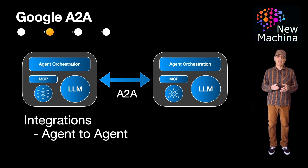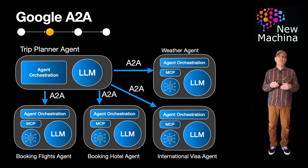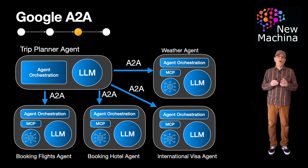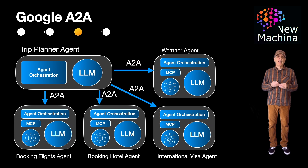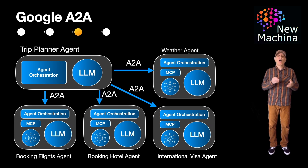Let me provide an example use case that shows how A to A and MCP can work together. Let's say your AI assistant is planning a trip. It doesn't do everything by itself — instead, it talks to other agents in the system. There is one agent for checking the weather, one for booking flights, another for booking a hotel, and maybe even one that checks international visa rules. Since all these agents speak A to A, they can work together easily. Inside the agent checking the weather, it uses MCP to integrate with the weather API and its supporting LLM. Here in the diagram, you can clearly see that the A to A protocol is used for communication between agents, while MCP is used by the agents themselves for integrating with tools and LLMs.